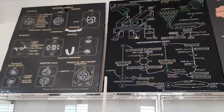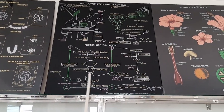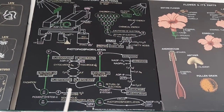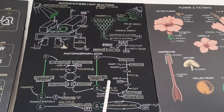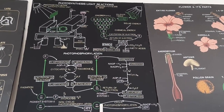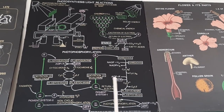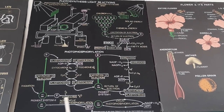Second is how photosynthesis occurs. This chart shows only the light reaction — how the light energy is converted into chemical energy.